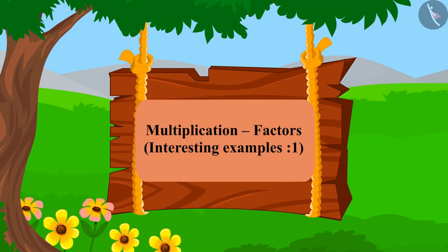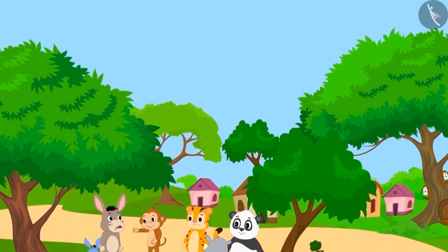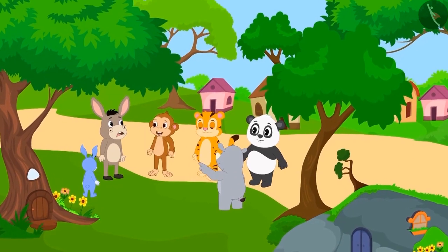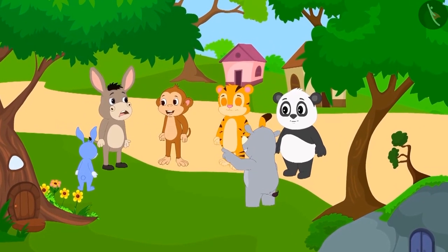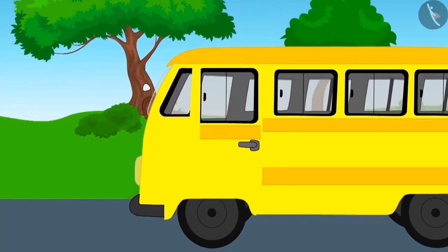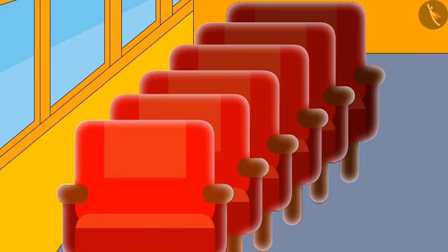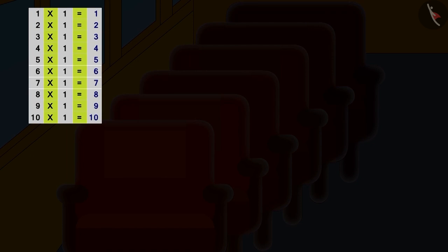Children, today we will learn more about factors of multiplication. People from Champapur are making plans to go on a picnic. They have to arrange for some buses for the picnic. The seating should be such that the number of people sitting in every row is equal. The first bus operator sent a bus in which only one person can sit in a row and there are six such rows. Can people sit in a bus like this? To find the answer to this question, we will need to find the factors of 6.